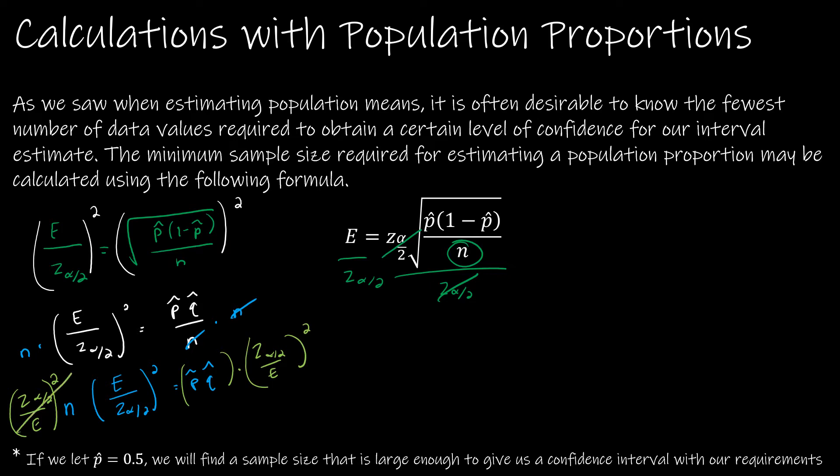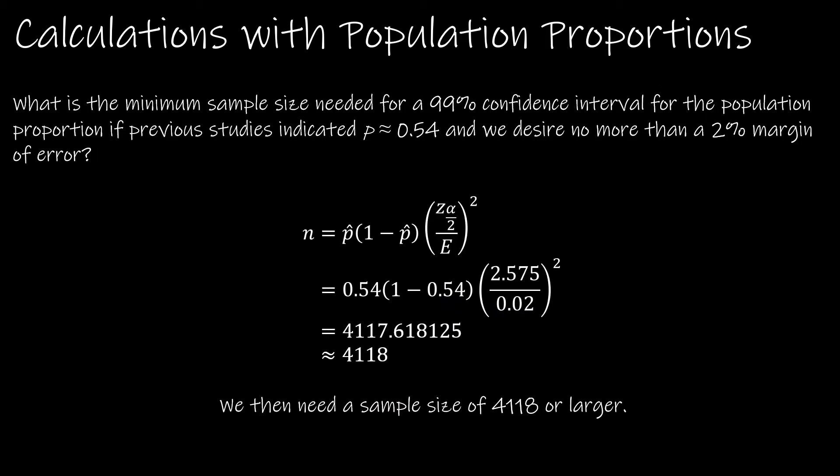That leaves me with my equation because now everything has canceled. So I have n equals p hat q hat, or if you're more comfortable, 1 minus p hat, and then z alpha over 2 divided by e quantity squared. This is the function that I'm going to use.